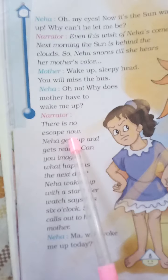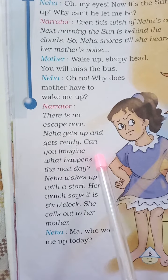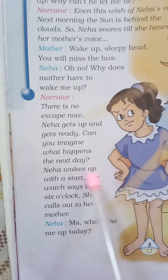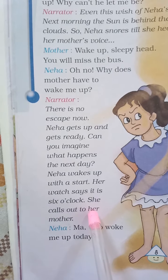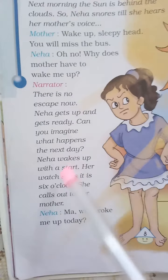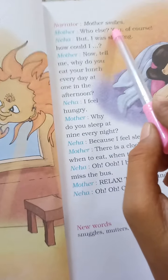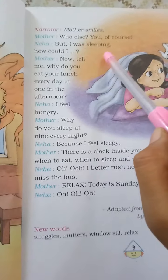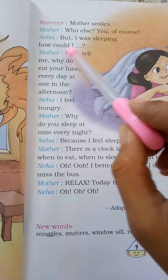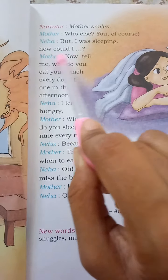Narrator: There is no escape now. Neha gets up and gets ready. Can you imagine what happens the next day? Neha wakes up with a start. Her voice says it is 6 o'clock. She calls out to her mother. Neha: 'Ma, who woke me up today?' Narrator: Mother smiles. Mother: 'Who else? You!' Neha: 'But I was sleeping. How could I?'